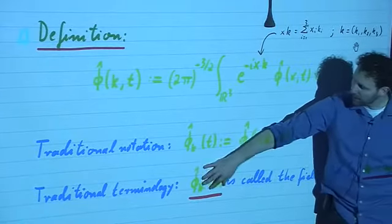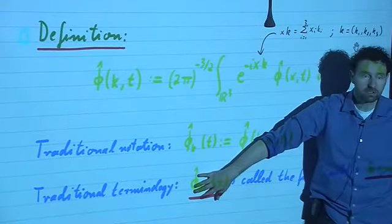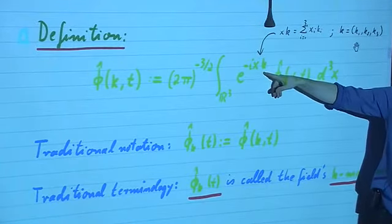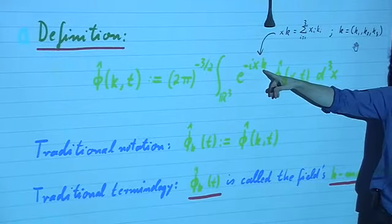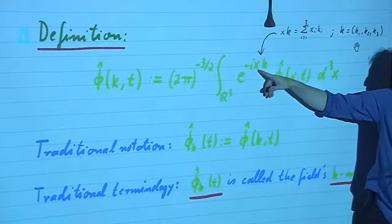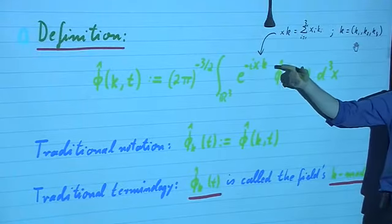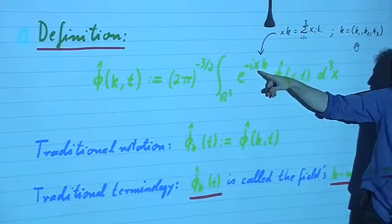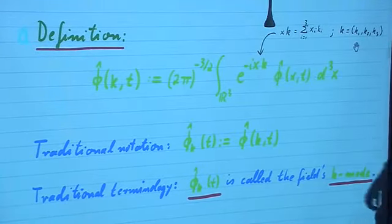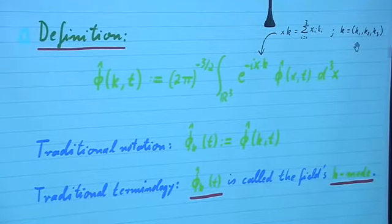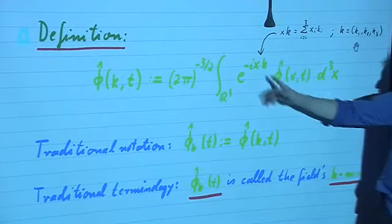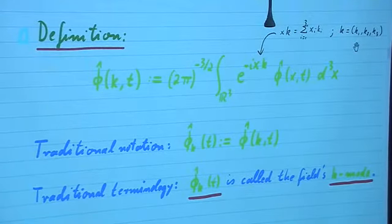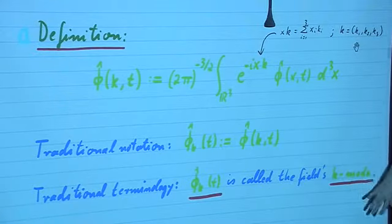Each phi_k of t is the Fourier component for a particular wave vector k. Remember that k has three indices running through x, y, and z coordinates. Whenever we do not write indices, it is implied that this is an inner product — the sum over i from 1 to 3 of x_i times k_i. For each fixed value of k, for each wave vector or momentum vector, phi_k is called a k-mode.